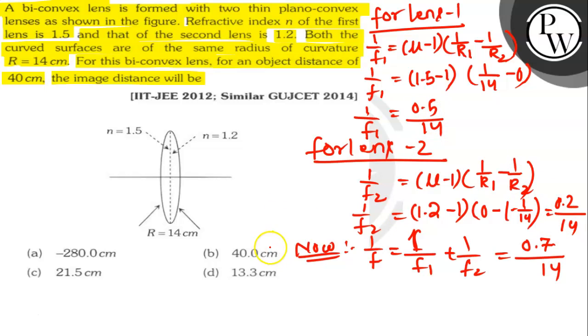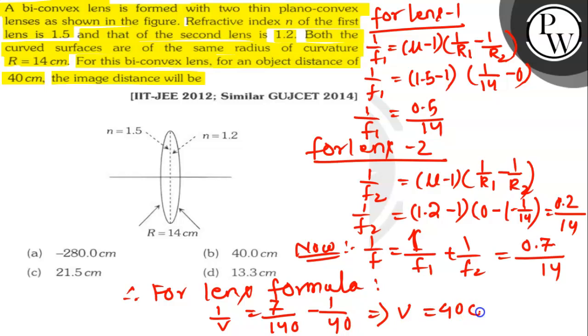Therefore for lens formula, 1 by v equals 7 by 140 minus 1 by 40. So v will be 40 cm.